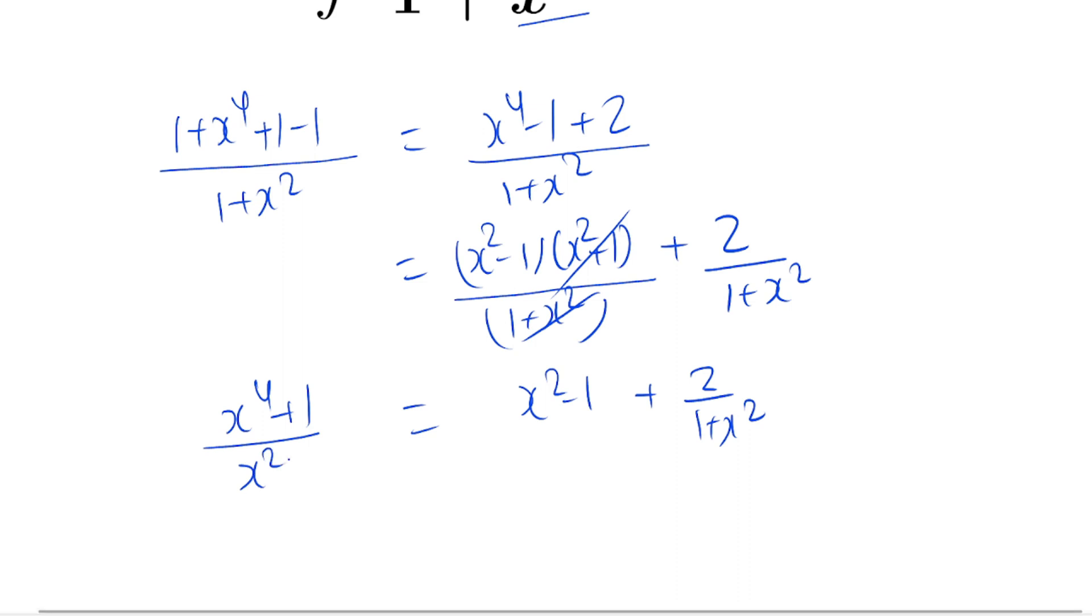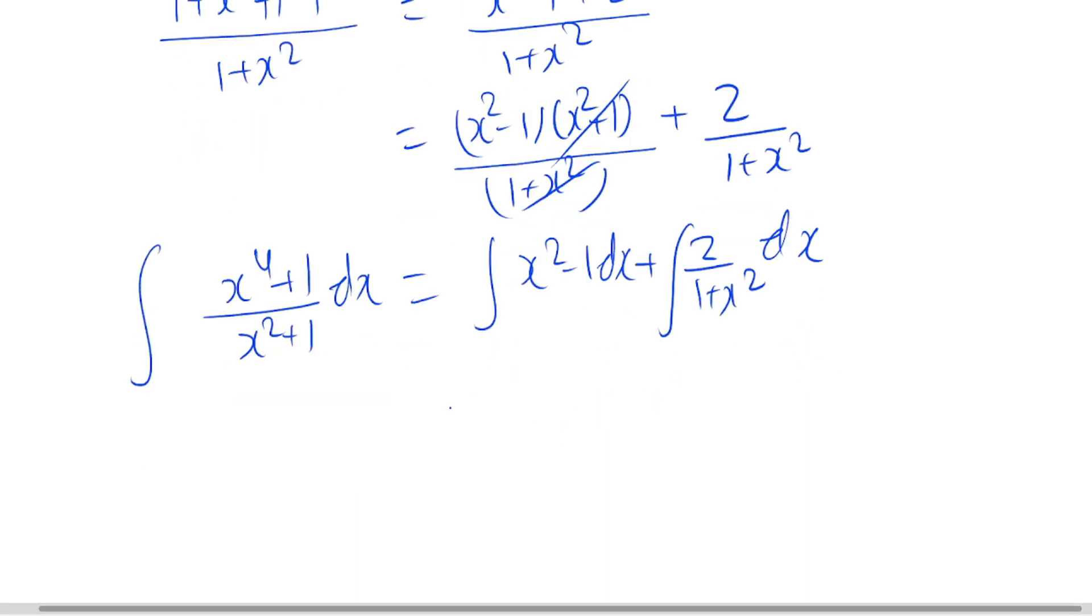We have reduced our function. Now let's integrate this function. So here x square minus 1 becomes x cube by 3 minus x, and here we have 2 over 1 plus x square, that is 2 times tan inverse x.